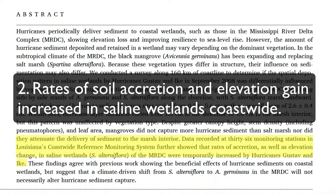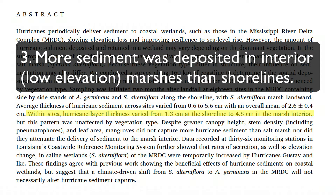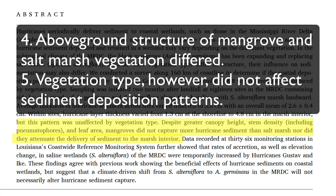The next highlight told the reader how sediment affected areas dominated by saline wetlands and added new search terms—soil accretion and elevation change. The next highlight described how hurricane sediment was distributed within the wetlands, with more deposited in interior areas of low elevation where it was most needed. The last two highlights conveyed the main finding that despite differences in plant structure—grasses versus trees—vegetation type did not influence sediment deposition patterns.